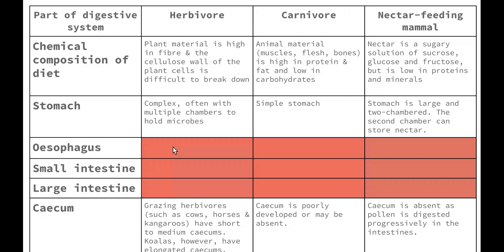The chemical composition of the diet of a herbivore, as we know, is plant material which is high in fibre, and the cellulose wall of the plant cells is difficult to break down. As a result, the stomach is quite complex, often with multiple chambers to hold microbes that assist in microbial fermentation.